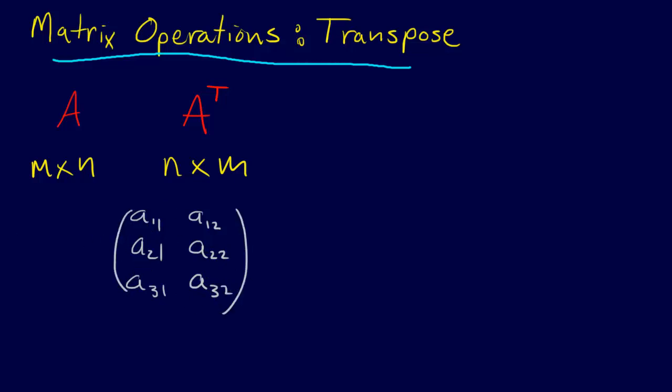And when we transpose it, what we do is we take this part of the matrix and we just flip it sideways, we rotate it sideways here, we rotate it down here, and we put it.